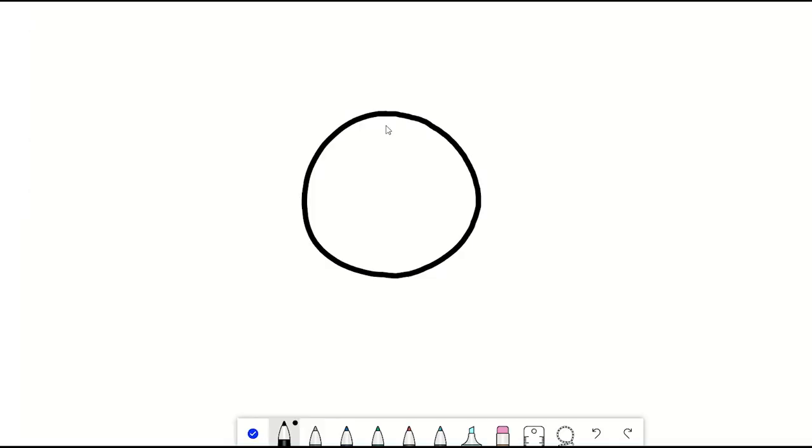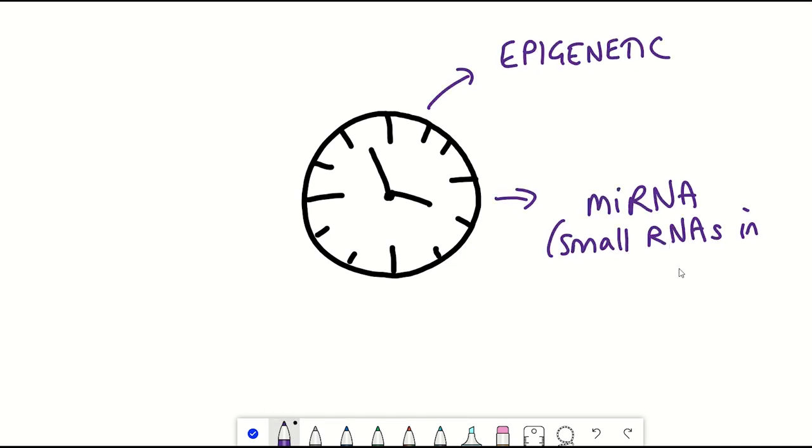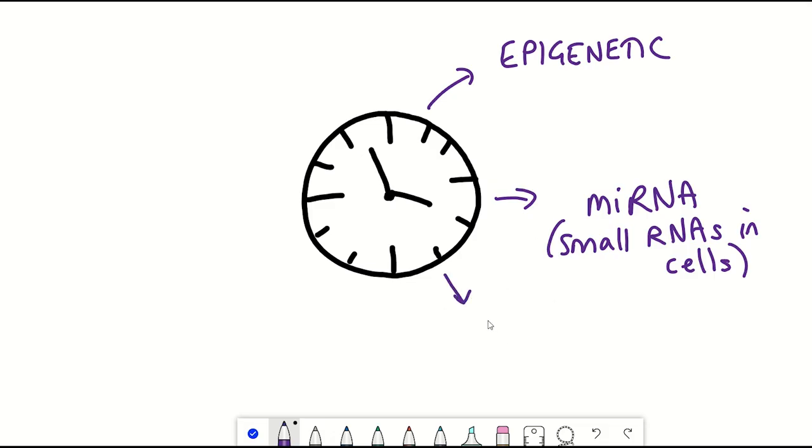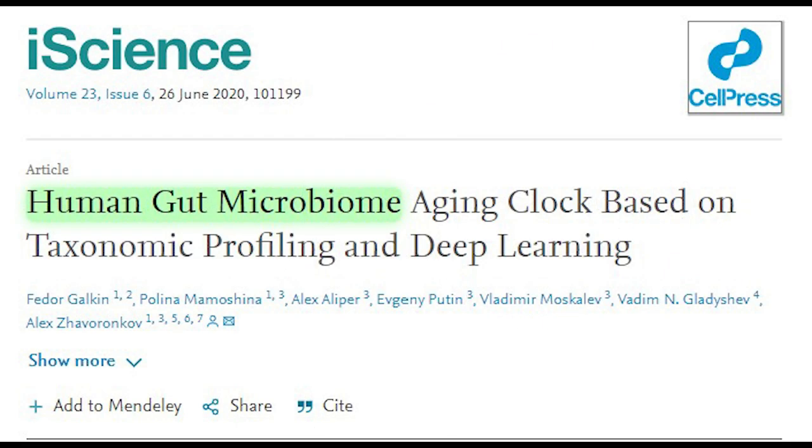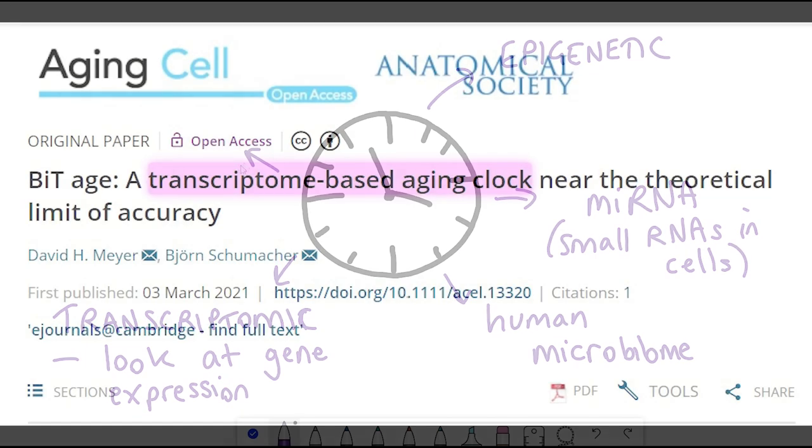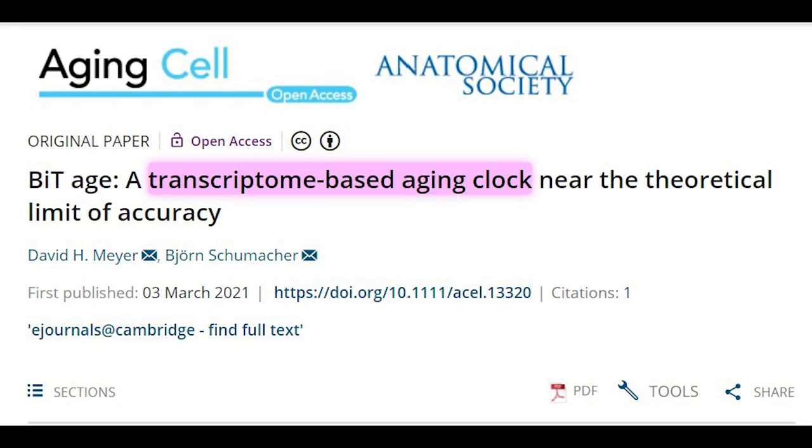And so in addition to DNA methylation, clocks have also now been made using microRNAs, so small RNAs found within a cell and looking at different expression patterns, as well as using the human microbiome. Moreover, clocks have been made that have used the expression of different genes in different tissues, and so this is known as transcriptomic data.